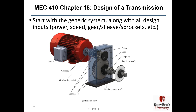In general, you start with a generic system with all the design inputs, which we will give you. In this example from chapter 15, it's a motor with a coupling that drives a pinion in a gearbox. There's a large gear which is connected to the output shaft of the gearbox. There's some bearings that support the shafts, and there is a saw drive shaft that is basically the output of this transmission.